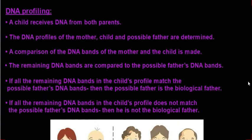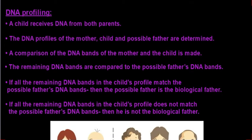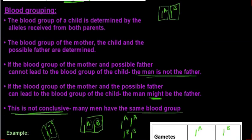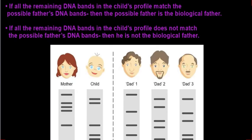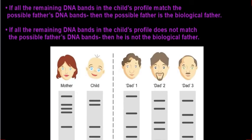Looking at DNA profiling — again, this is from the memo. A child receives DNA from both parents. The DNA profiles of the mother, the child, and the possible father are determined. It is very important that you mention all three of these people involved, same as with blood grouping. A comparison of the DNA bands of the mother and the child is made. The remaining DNA bands are compared to the possible father's DNA bands. If all the remaining DNA bands in the child's profile match the possible father's DNA bands, then the possible father is the biological father.